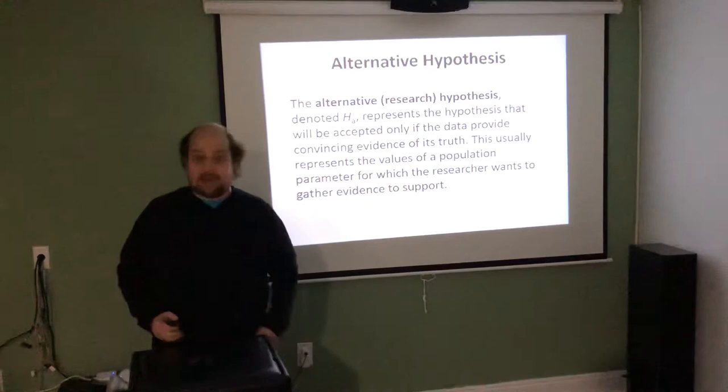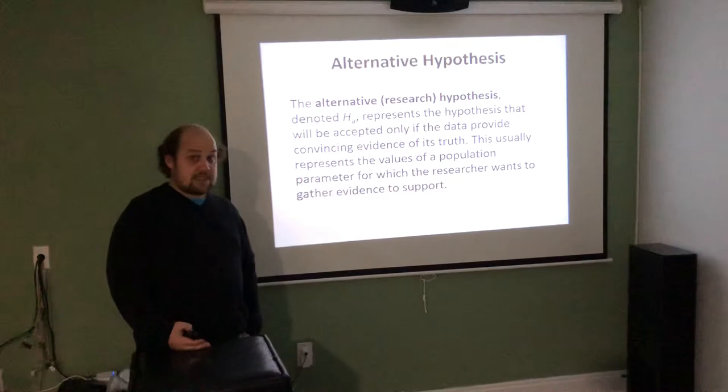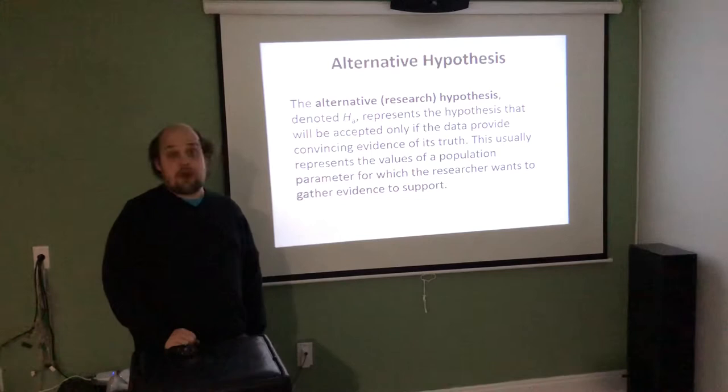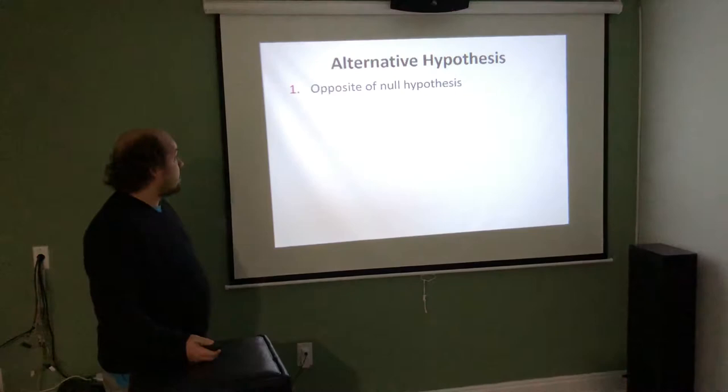We set up a null hypothesis that we want to disprove in order to prove the alternative hypothesis HA. This is going to be an important first step. Essentially there are five steps we need to get through, and the first one is properly setting up the null and alternative hypothesis.